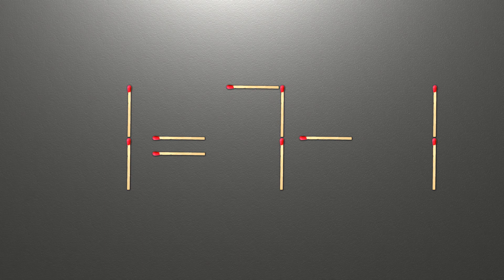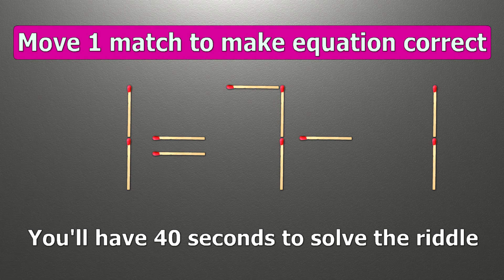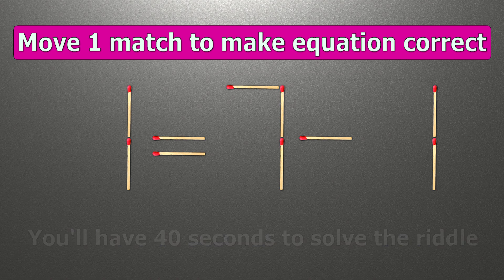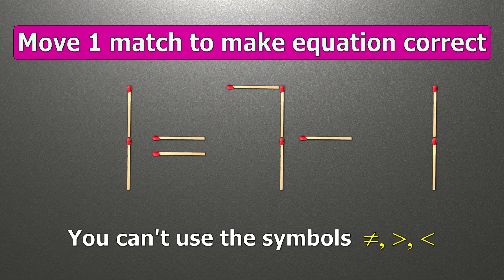Hello! We have the equality 1 equals 7 minus 1. Our equality is wrong. We need to move one match to make our equality correct.